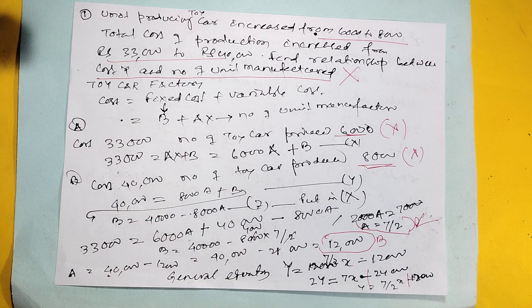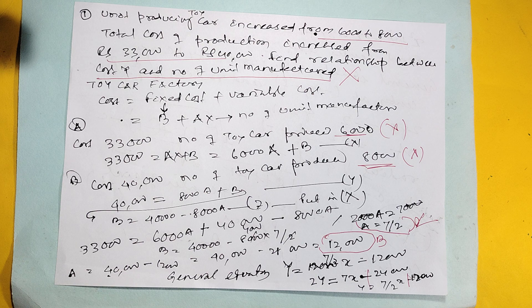Here you calculate, A is coming to 7/2 and B is coming to 12,000. So Y equals 7/2X plus 12,000.